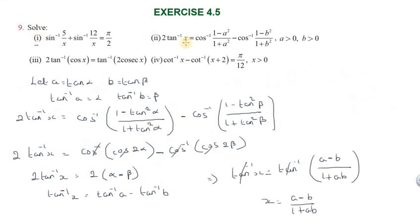Second problem: Prove that 2tan⁻¹x = cos⁻¹((1 - a²)/(1 + a²)) - cos⁻¹((1 - b²)/(1 + b²)), where a > 0.